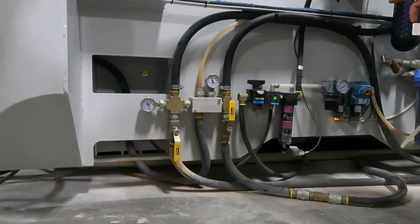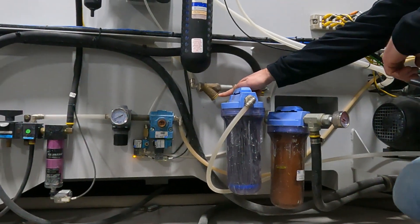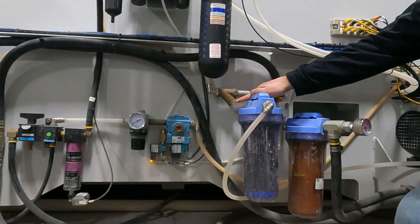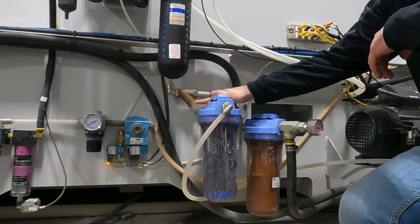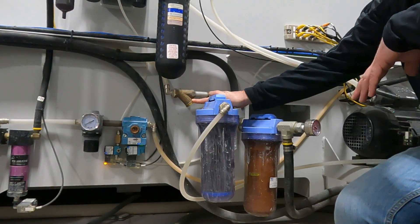From there then, this line comes over to your Y strainer here. And in this Y strainer, you can remove this nut. And that is a screen that you need to clean and or replace if it gets real bad there.